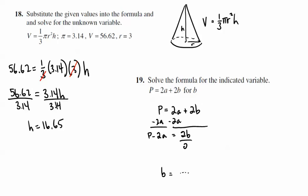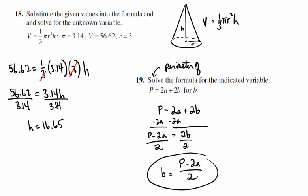And to further isolate the b, just divide both sides by 2. And we end up with b is going to equal P, capital P minus 2a over 2. So that's solving the perimeter equation. Again, this is perimeter of a rectangle.